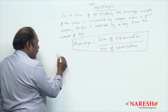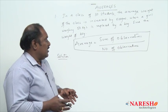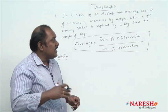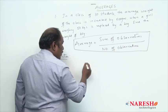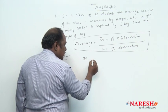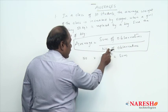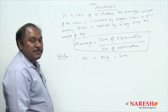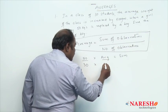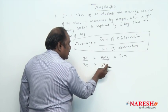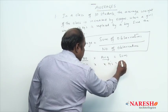How to solve this question using the formula? There are 30 students in the class. We do not know the average weight, so let us assume the average weight of these 30 students is x kilograms. Then the total weight of these 30 students will be 30x.